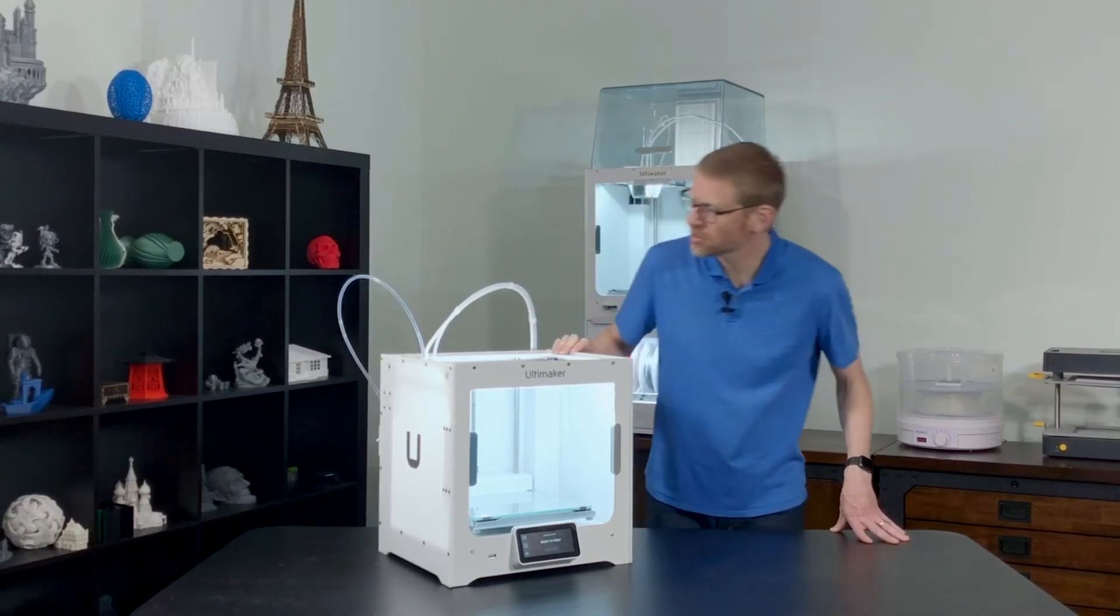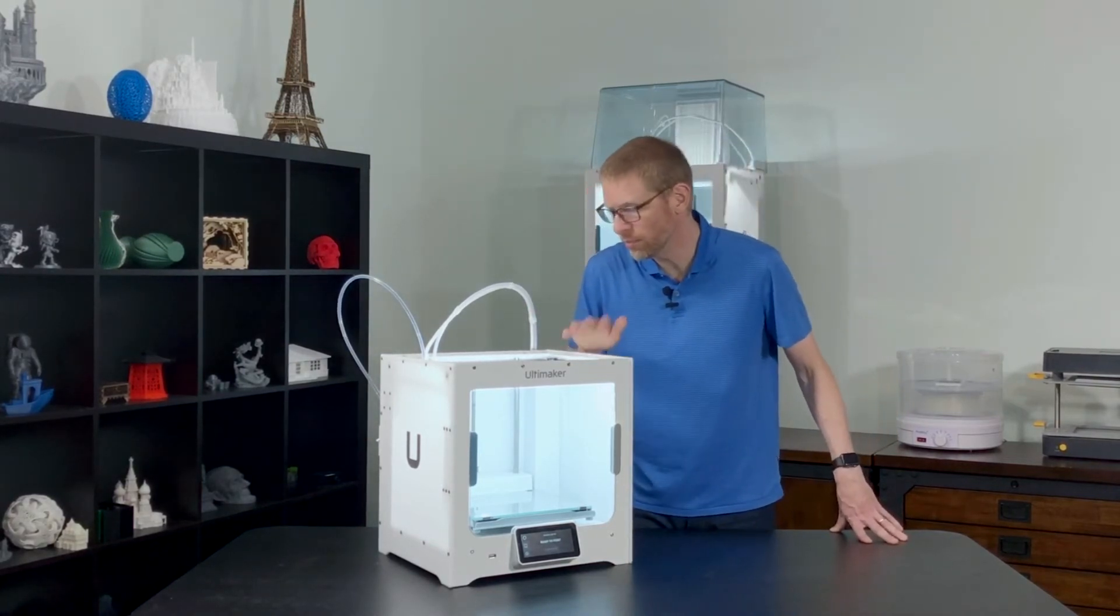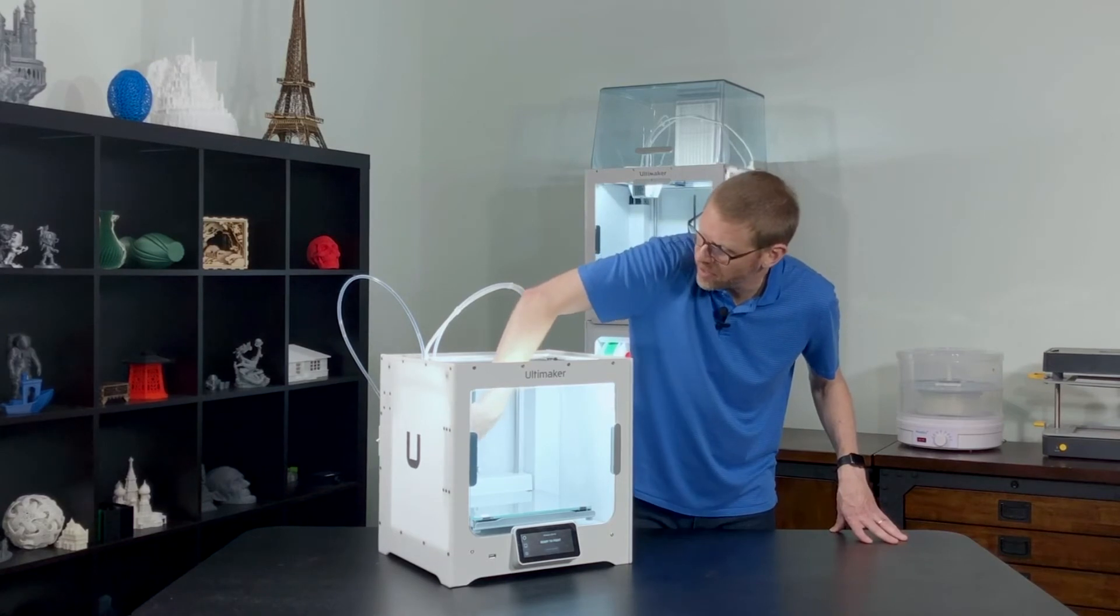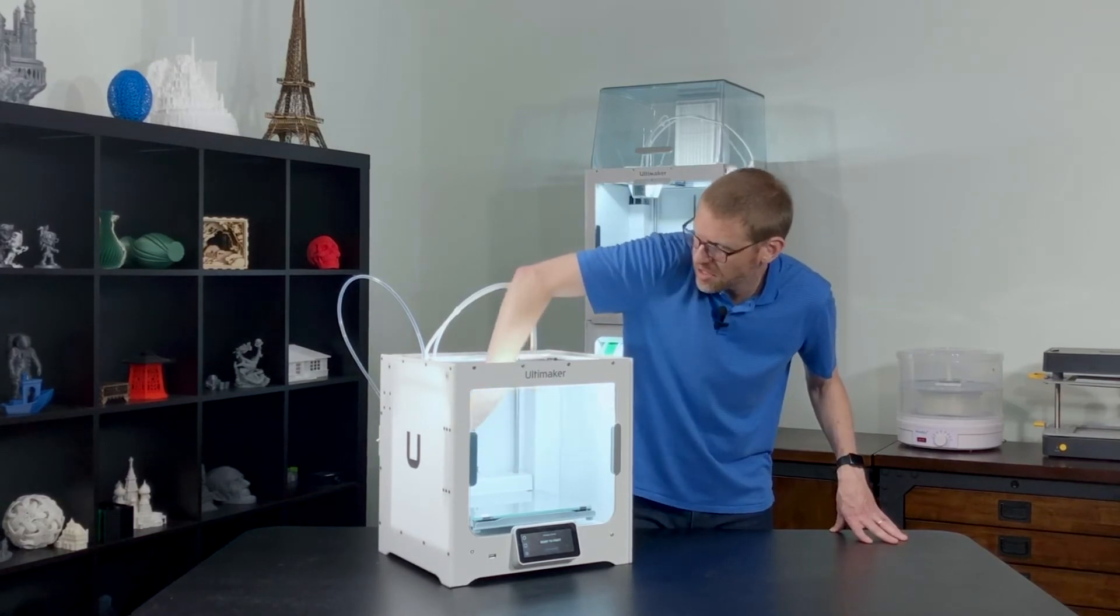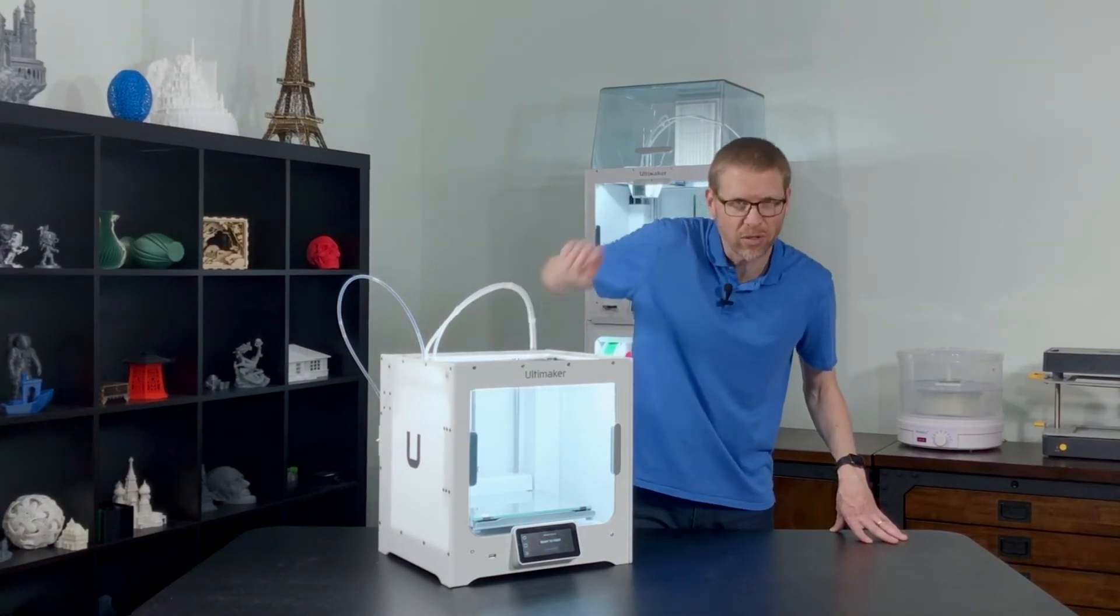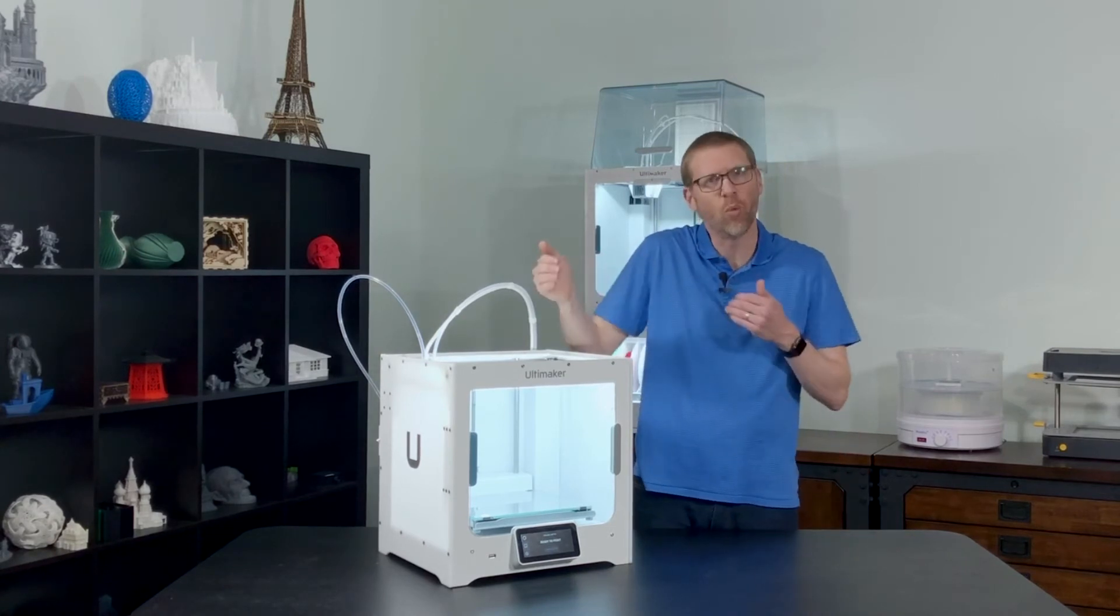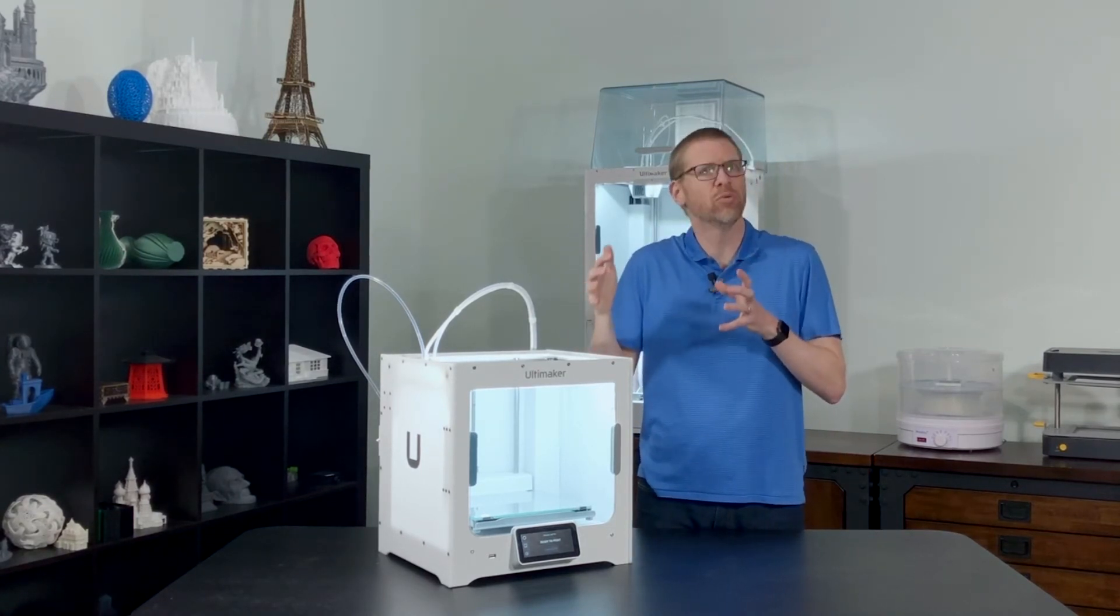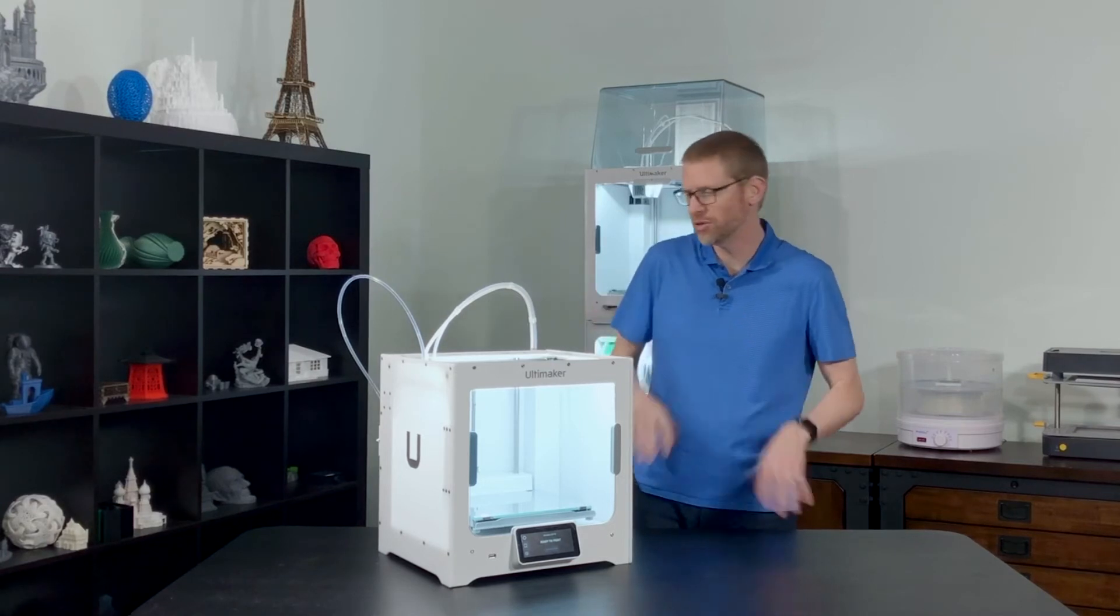Inside you have some other improvements, such as a more stable build table. They've did that by adding these thicker Z-axis rods on the sides here. These are a little thicker than they used to be, and they're a little bit wider apart than they were on the Ultimaker 3, so it gives you a bit more stability overall on that build surface.